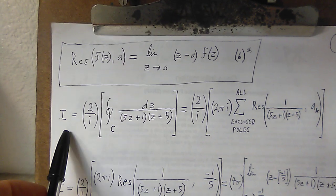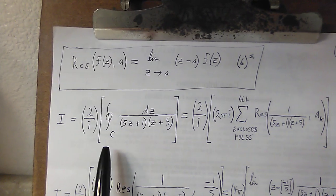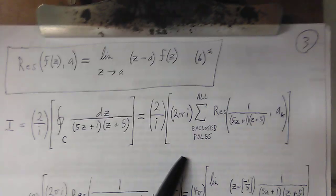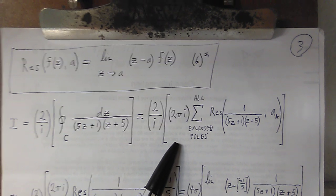From there, what we can do is we can take the integral I and we can basically equivocate that to the sum of those residues. As I just said,